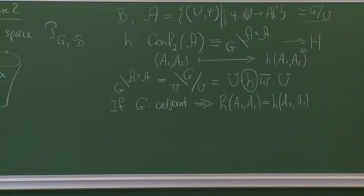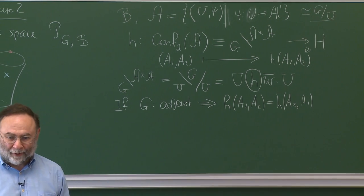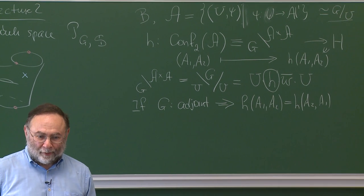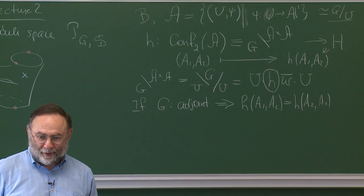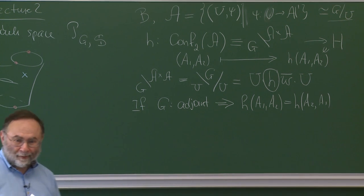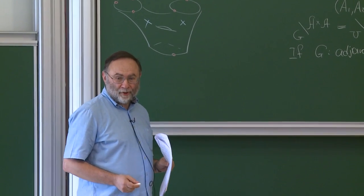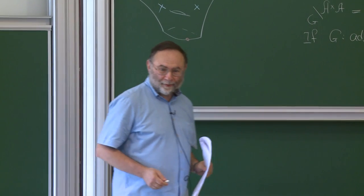A question is raised about the birationality of the map and which Weyl group element W is used. The answer is that a specific lift is used. For example, you will see how all this works for PGL2.